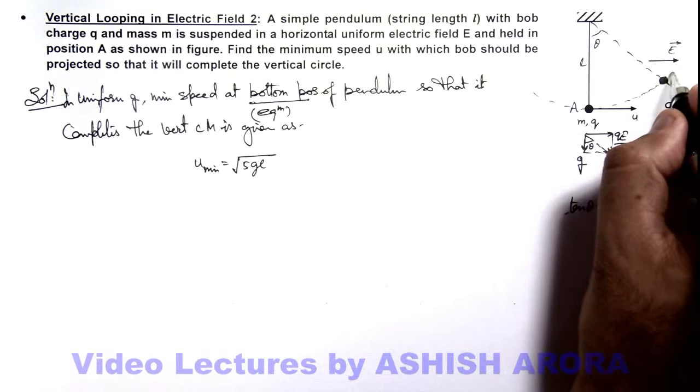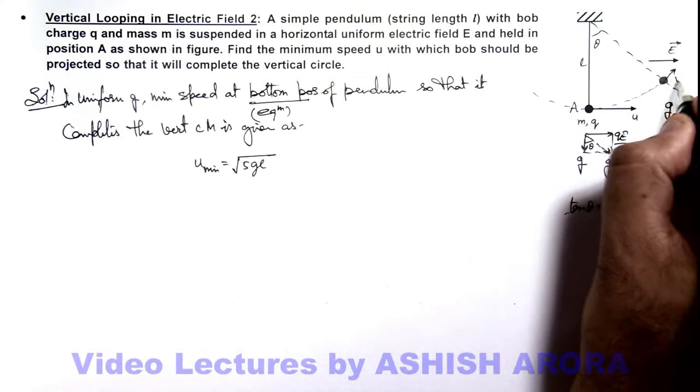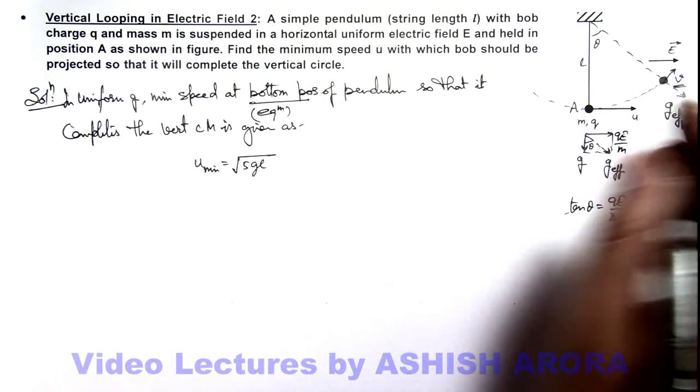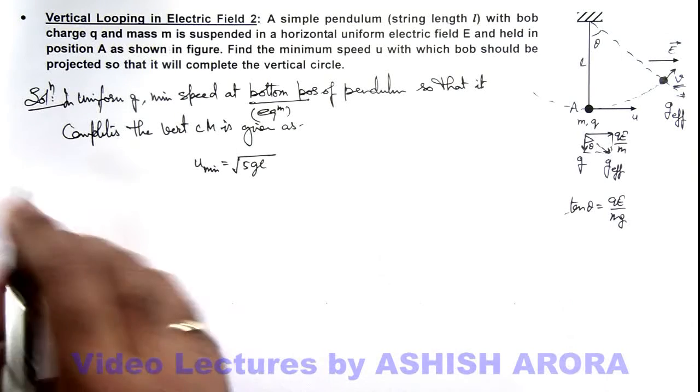So at this point the minimum speed is say v, then v can be written as root 5 g effective into l. So here we can write.